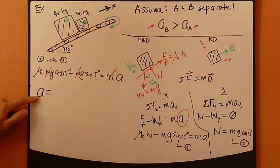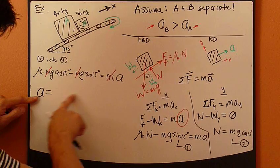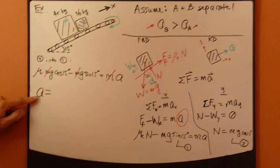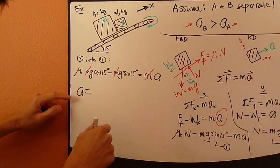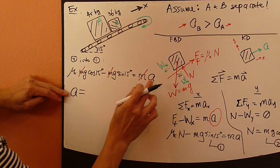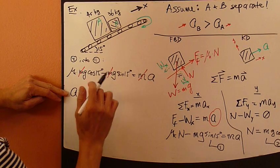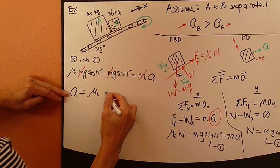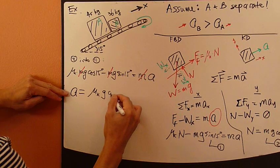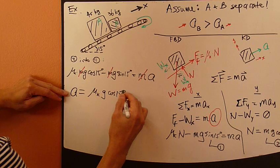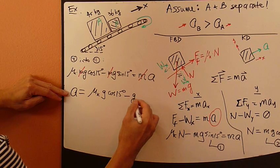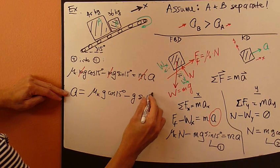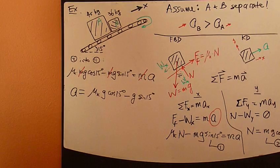Write the unknown on the left-hand side, and move everything else through to the right. Now, so everything else really is just mu_K g cosine 15 minus g sine 15.